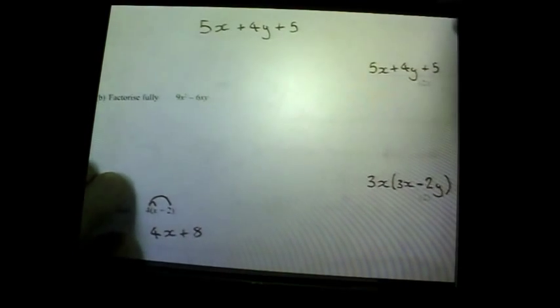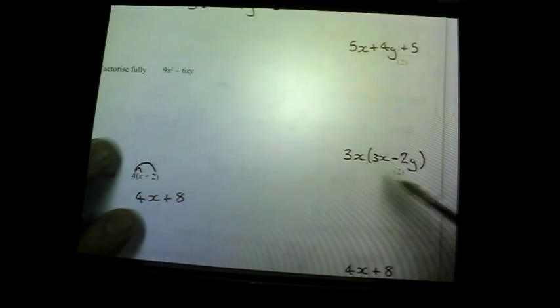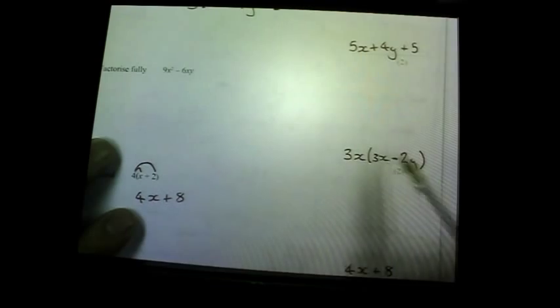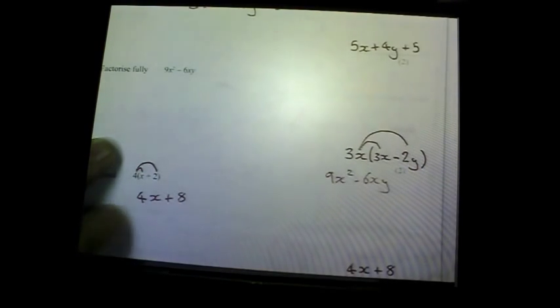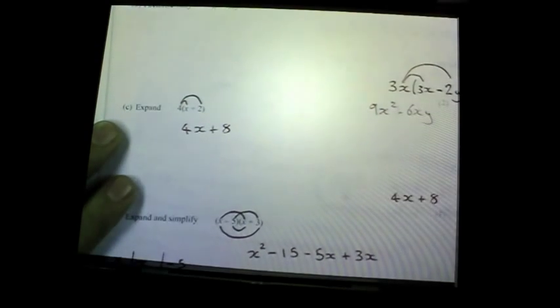Next one: factorise fully. Find what is common in both 9x² and 6xy — 3x is common in both, so 3x goes on the outside of the brackets. 3x times what equals 9x²? It's 3x again, because 3 times 3 is 9 and x times x is x². 3x times what equals 6xy? 3 times 2 is 6 and x times y is xy, with a negative, so it has to be a takeaway there as well. To check, multiply the bracket back out.